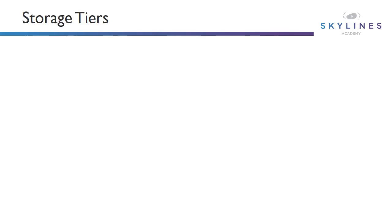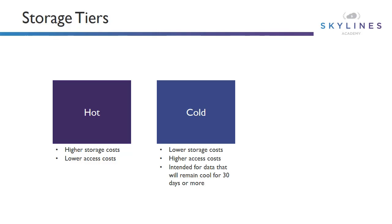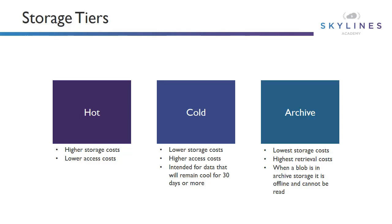The next thing we need to cover is storage tiers. We've decided we want to use blob storage and store a bunch of images, but what's the right tier? The first is hot storage — this has our highest storage costs but our lowest access costs. Think of this for frequently accessed images we might be utilizing in our application, or website content accessed very periodically. Then we have cold storage, which has lower storage costs but higher access costs. It is possible to move from cold to hot and hot to cold, but you do incur a cost penalty when you do that. Cold storage is really intended for data that will remain cool for 30 days or more to be cost effective. Finally, we have archive storage, which has our lowest storage costs but our highest retrieval costs. When a blob is in archive storage, it is offline and cannot be read.